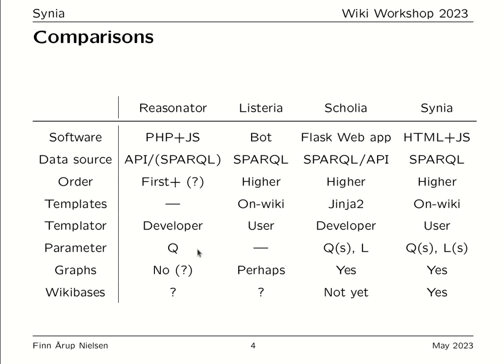Regarding parameters: Resinator can generate a page for each QID identifier. In Listeria, you need to define a new SPARQL query for each thing you want to display. In Scolia and Cynia, we can display multiple pieces of information from one or multiple QID or Lexeme identifiers. Also in Scolia and Cynia, we can use the capabilities of the query service to display graphs.